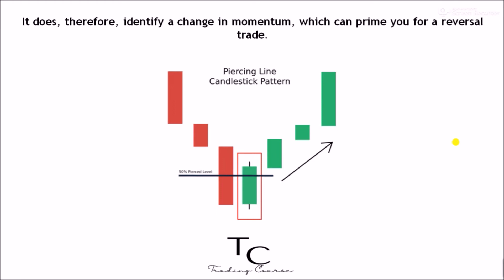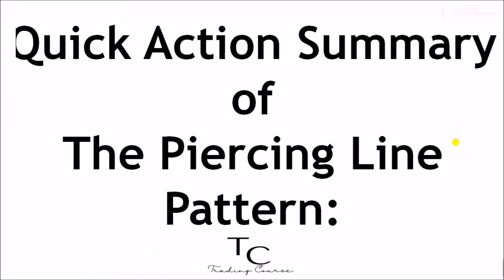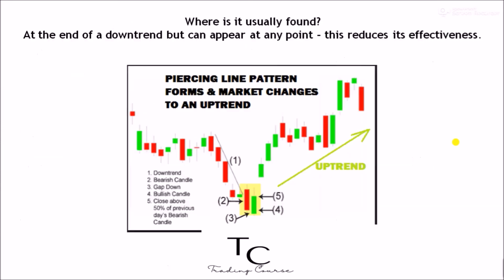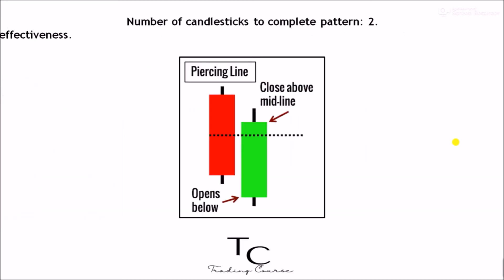It does therefore identify a change in momentum, which can prime you for a reversal trade. Quick action summary of the piercing line pattern: where is it usually found? At the end of a downtrend, but it can appear at any point — this reduces its effectiveness.